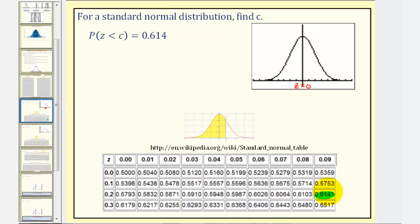Notice how the Z-score for this probability, or this area, would be 0.29. So we'll say C is approximately 0.29.